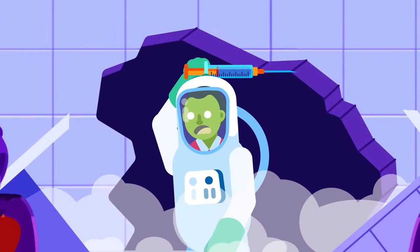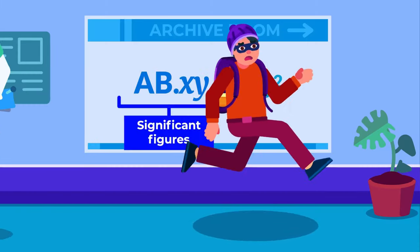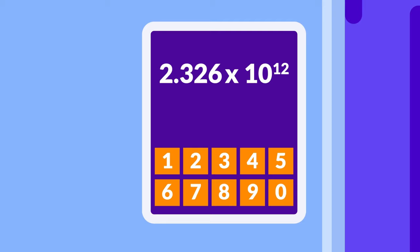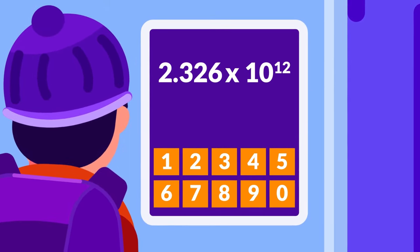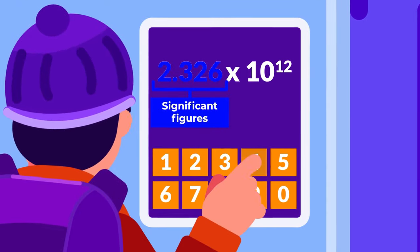Number 2: In scientific notation, only the digits before the power of 10 are significant. So, there are four significant figures in 2.326 times 10 to the power 12.